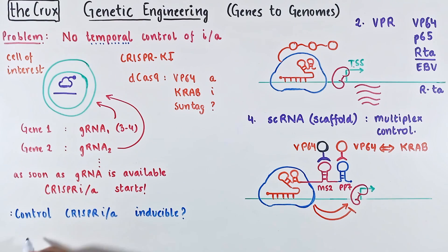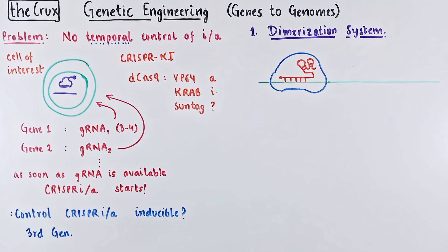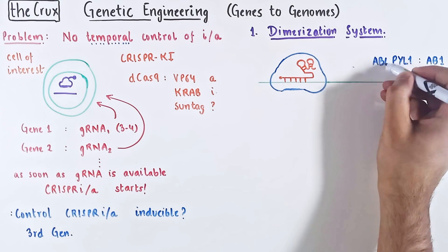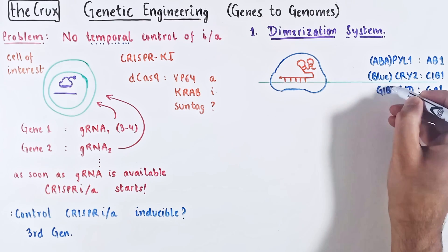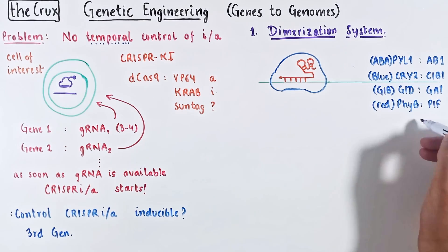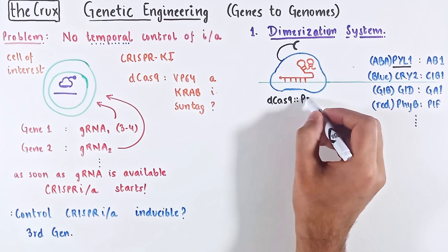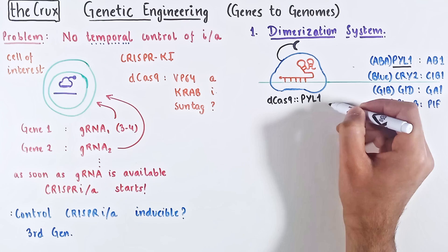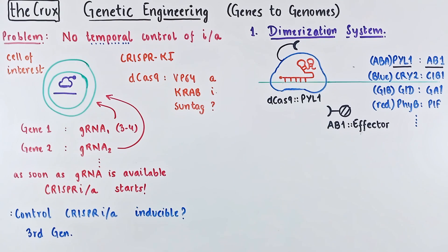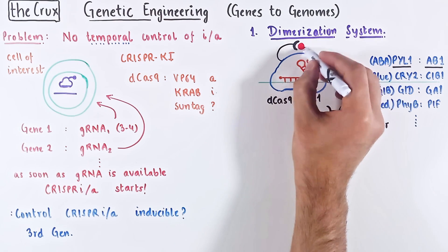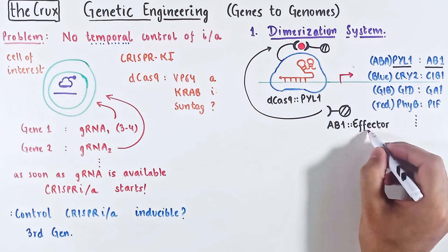You can implement temporal control in multiple ways. One uses a dimerization strategy: in nature, pairs of proteins dimerize only if an inducer is available. For instance, PYL1 and ABI1 come together if abscisic acid is present; Cry2 and CIB1 are sensitive to blue light. You fuse one partner — say PYL1 — to dCas9, and the other partner is fused to an effector domain. Normally PYL1 and ABI1 do not interact, so the dCas9 system will not work. But if you introduce abscisic acid, PYL1 and ABI1 dimerize, the effector crowds at the dCas9 location, and depending on the effector, the system starts working.